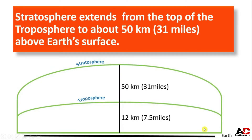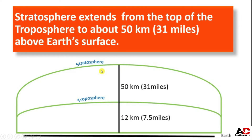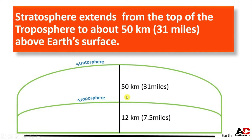From the Earth's surface to 12 km height we have the troposphere. And from the troposphere to 50 km height we have the stratosphere. The area from 12 km to 50 km is the stratosphere.